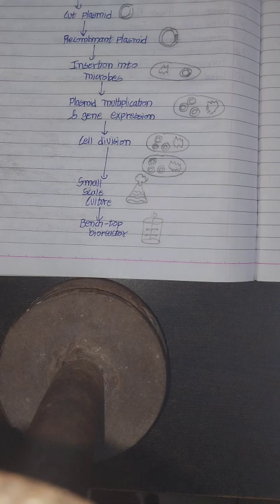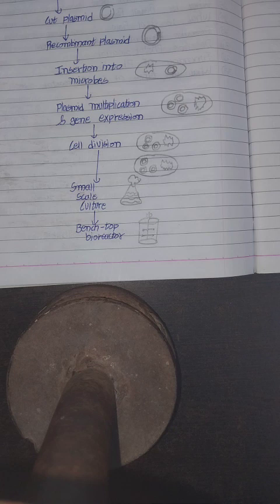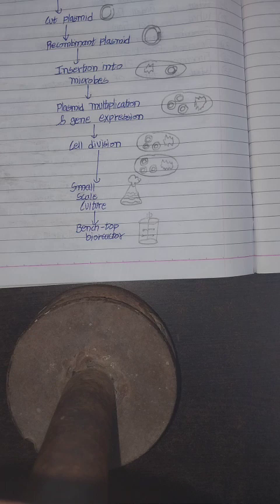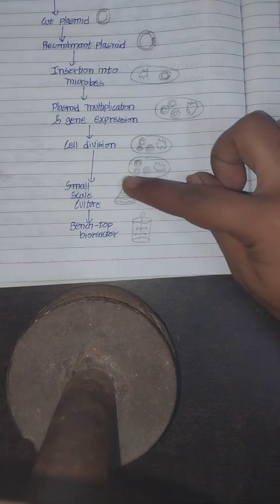After this cell division, we get the small culture. So we make the small scale culture in the conical flask, which you can see here.